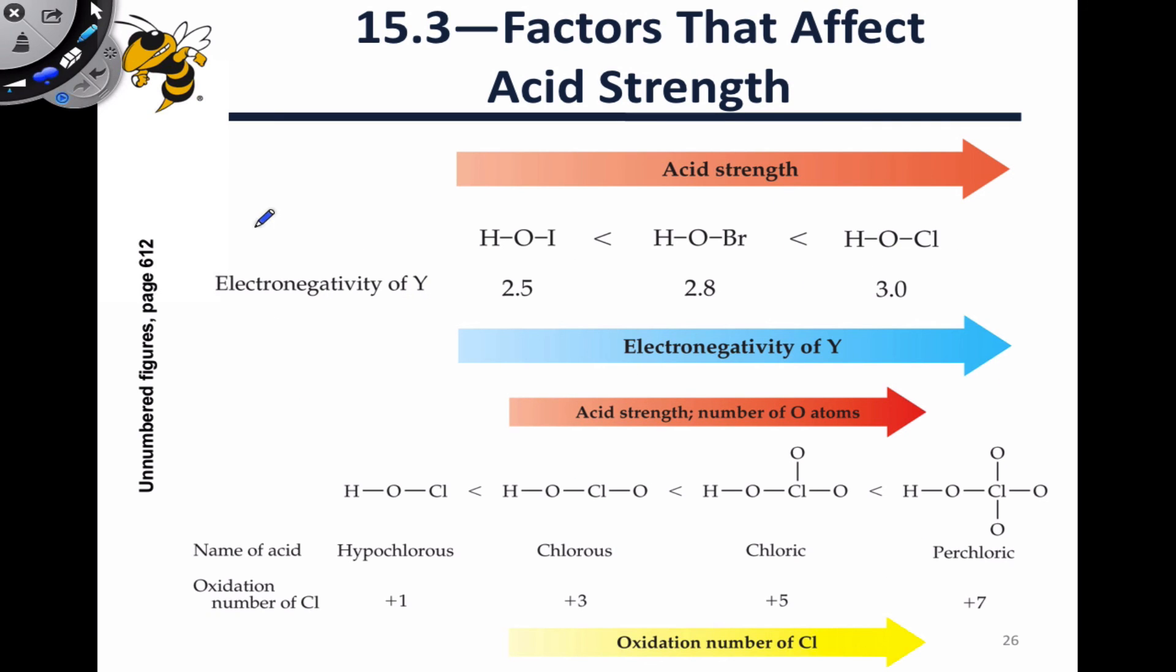Just to show you a couple of examples of this, for the oxoacids containing one oxygen atom, H-O-Y, we can see that the electronegativity of the Y atom plays an important role in the acid strength. The most acidic H-O-Y oxoacid has the most electronegative Y atom, it's H-O-Cl. The least electronegative Y atom, the iodine, is associated with the weakest acid.